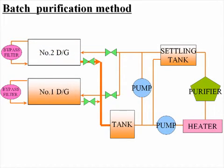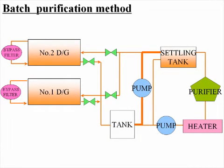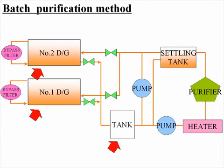For example, the lube oil of the number 2 diesel generator engine is transferred to the tank. Lube oil which has been already purified is fed to the number 2 diesel generator engine. The used lube oil is transferred to the settling tank, then purified for the next lube oil replacement. Fix the purification time so that the lube oil in the tank can flow through the purifier more than 20 times. Clean the sump tanks and the tank on a periodic basis.